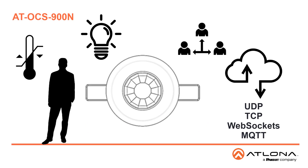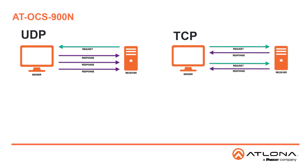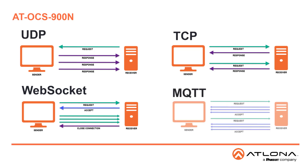UDP is a simple, connectionless communication model allowing devices to send messages over an IP network. TCP involves an established connection between the client and server and provides error-correcting testing, making it more reliable than UDP. WebSocket is a more advanced form of TCP and allows full-duplex communication between the client and server. MQTT requires minimal resources and employs a publish-subscribe architecture between clients that are managed by a broker, allowing it to be easily scaled.